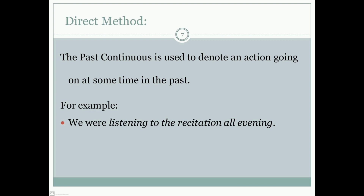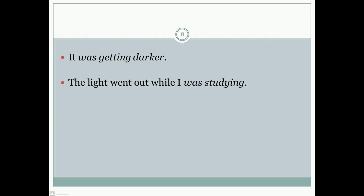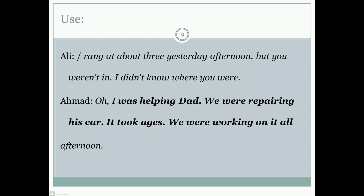For native speakers using the direct method, the past continuous is used to denote an action going on at some time in the past. For example, 'We were listening to the recitation all evening' — the action was happening somewhere in the past. Another example: 'It was getting darker' or 'The light went out while I was studying' — I was in the middle of the action, that is, studying.